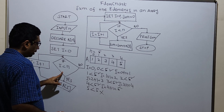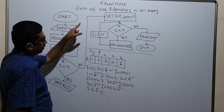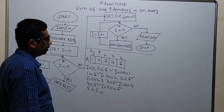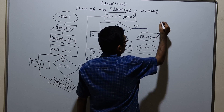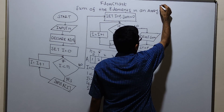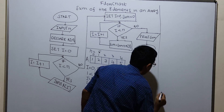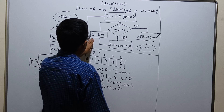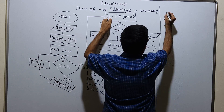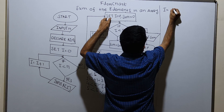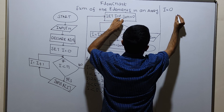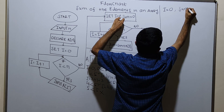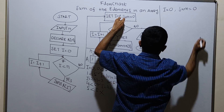So the control will come out of this loop. Input is over. Now I am initializing i equal to 0 and sum equal to 0.